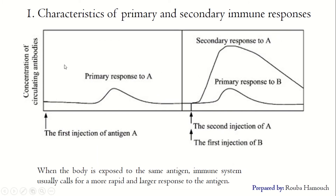This graph also shows that when the body is exposed to the same antigen — for example, antigen A — after a first injection of antigen A, upon the second injection of antigen A alongside a first injection of antigen B, the secondary response to antigen A is more rapid and larger than in the primary response. So the immune system mounts a more rapid and larger response to the antigen following its second entry into the body.